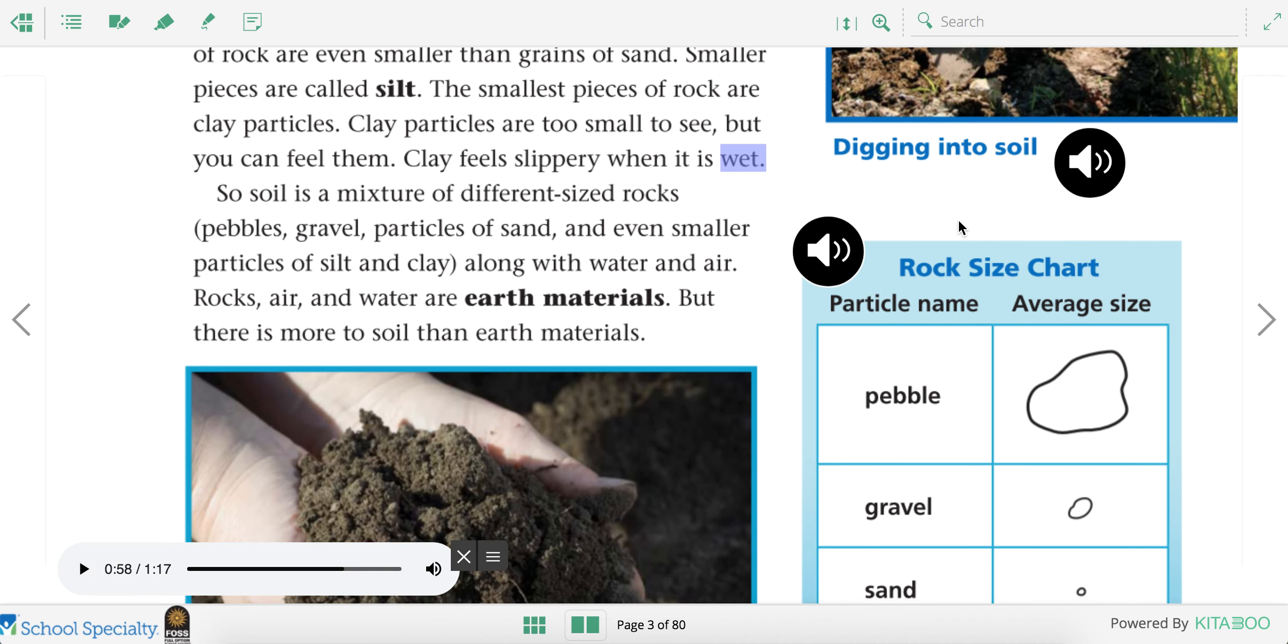Let's move up again and keep listening. So soil is a mixture of different sized rocks, pebbles, gravel, particles of sand, and even smaller particles of silt and clay. Along with water and air. Rocks, air, and water are earth materials. But there is more to soil than earth materials.